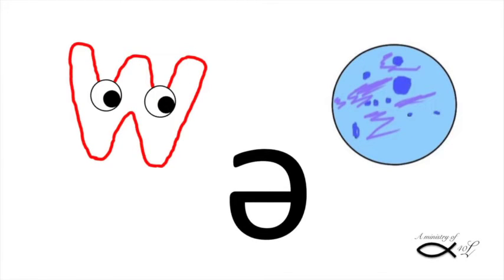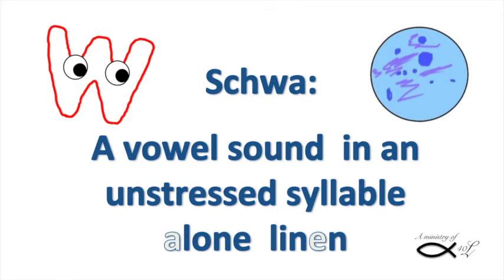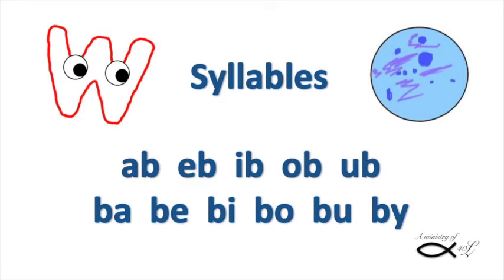According to the American Heritage Dictionary, schwa is a noun: a vowel sound that in English often occurs in an unstressed syllable, as the sound of A in 'alone' or E in 'linen.' First, some syllables. Then we'll show you how syllables interact with schwa to make the power of Webster.